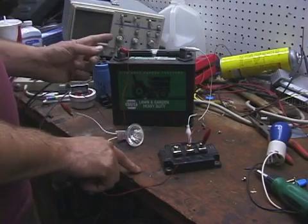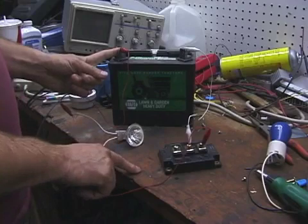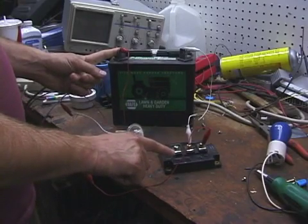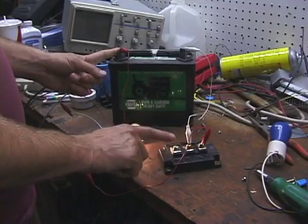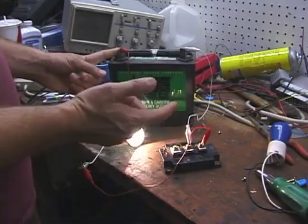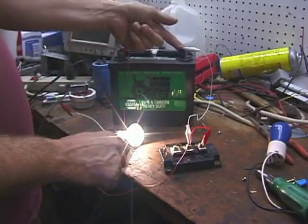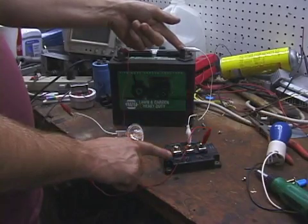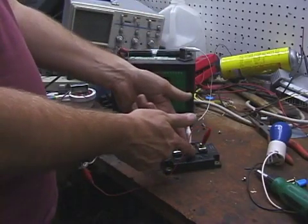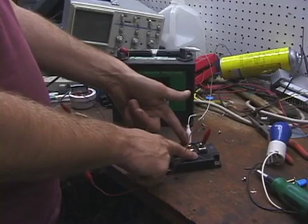So what we'll do is touch the positive battery terminal, and then I'll touch the spade connector for G2. And as you can see, the light turns on. If I touch negative, the light goes off. So we know the second IGBT in this brick here is okay.